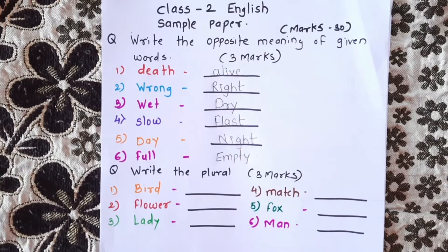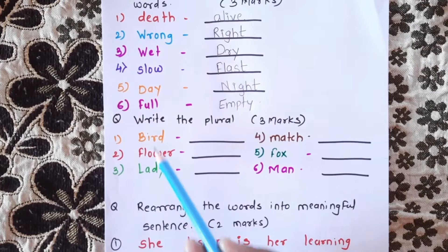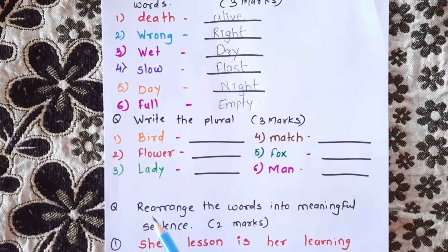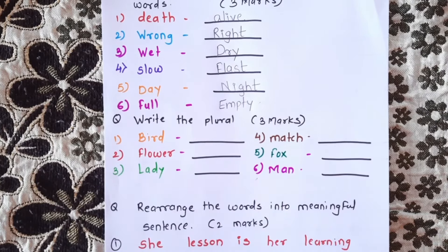These are opposite words. The next question is about plural forms. They are trying to pick up the words — total six questions, 3 marks, half marks each.